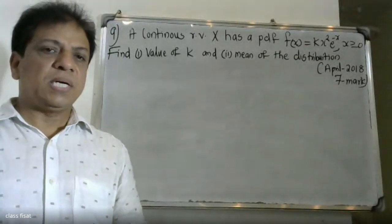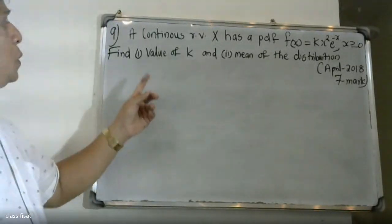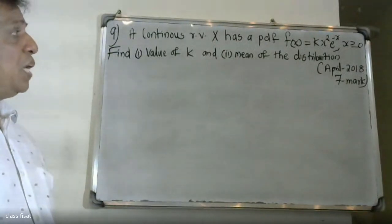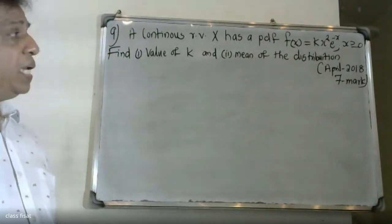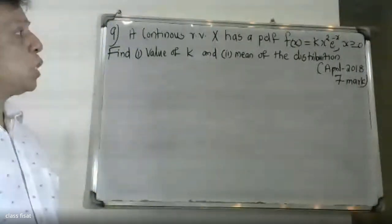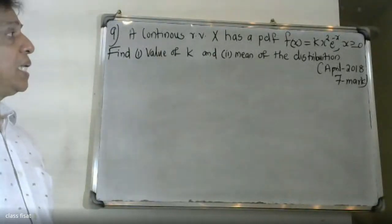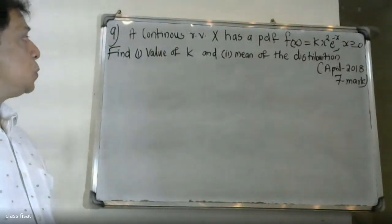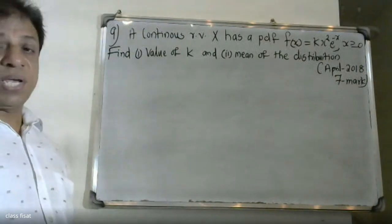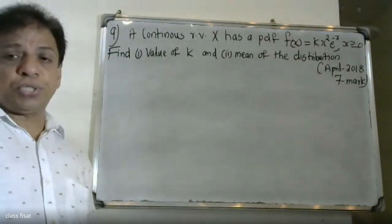Good morning, students. Another university question. A continuous random variable X has probability density function f of x equal to k x squared e raised to minus x, where x is greater than or equal to 0. Question one: find the value of k. Question two: find the mean of the distribution.